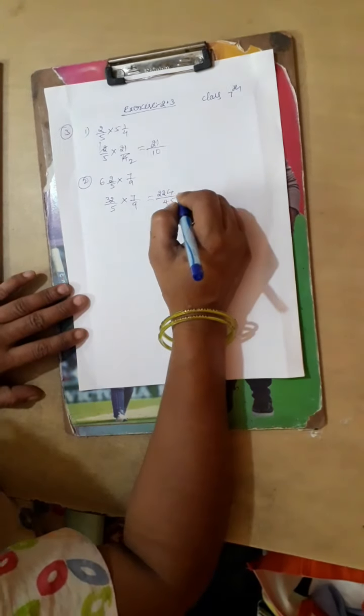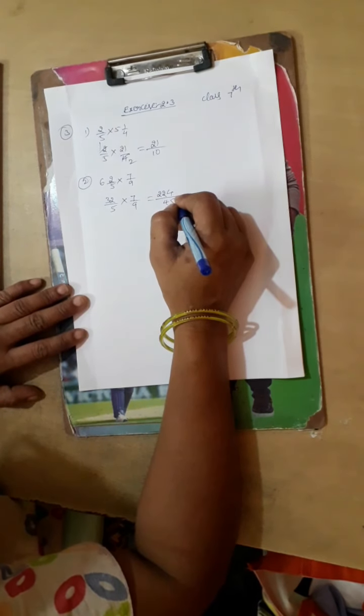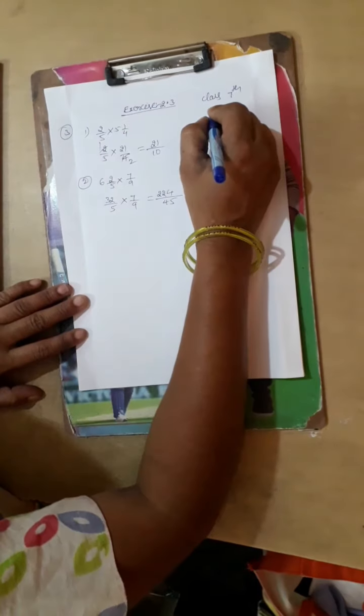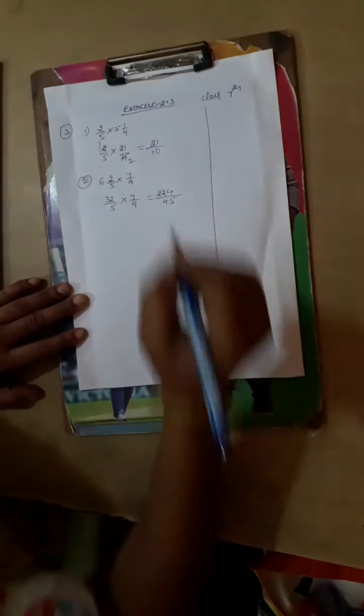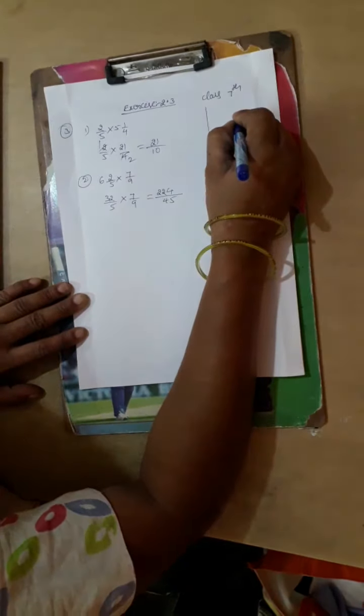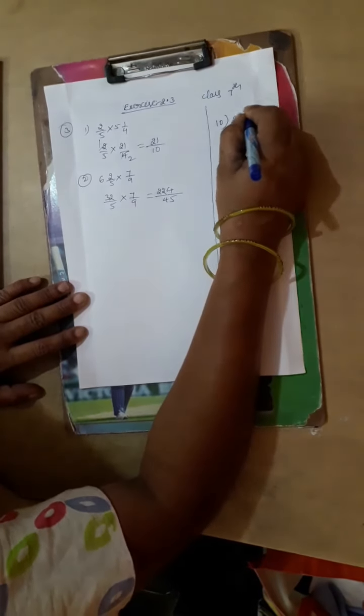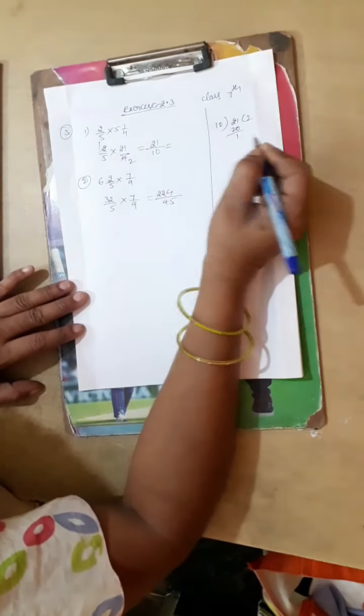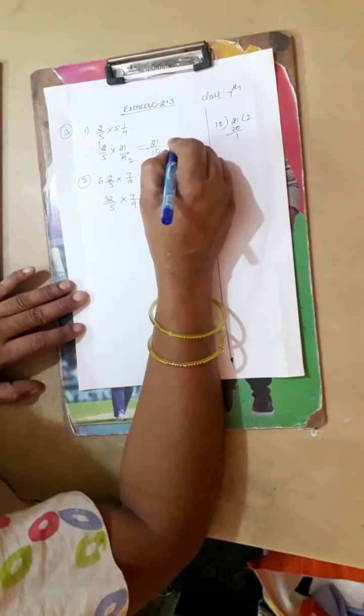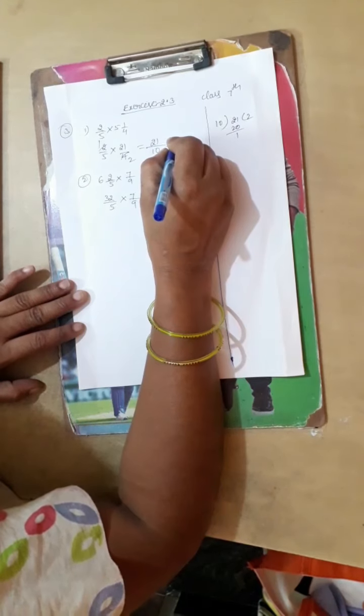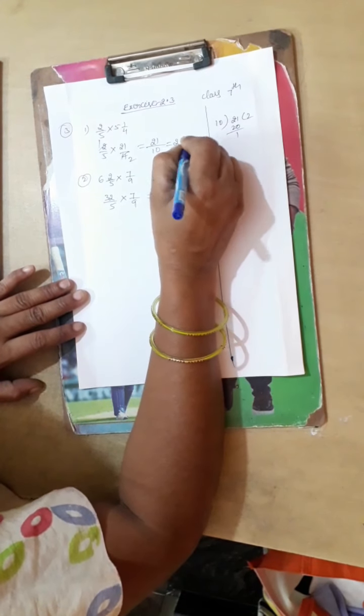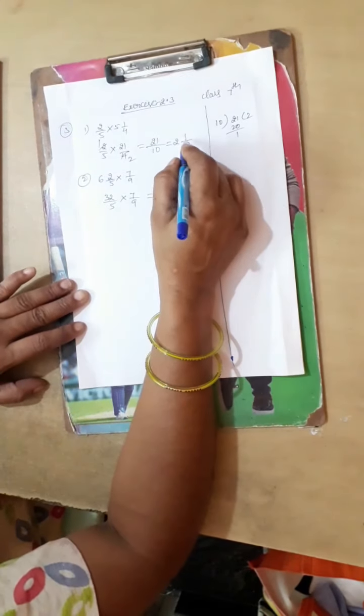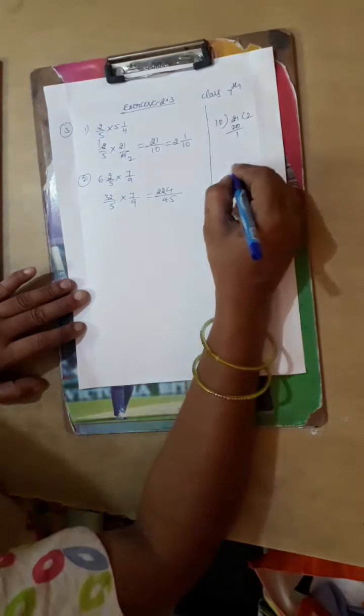Or else we can keep this answer in mixed fraction. Suppose if you want to keep this answer in mixed fraction, so let us divide 21 by 10. Which is equal to 2, then remainder will come upside as 1 by 10.